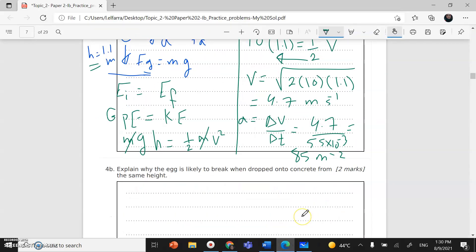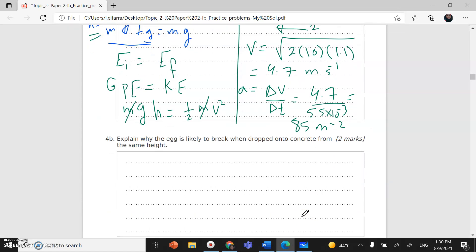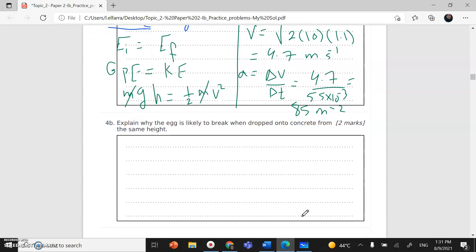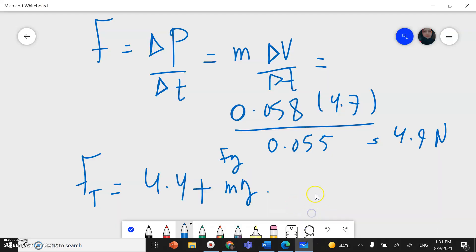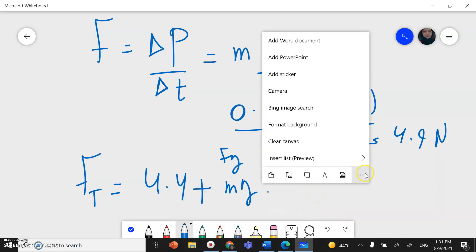Now part 3 of the question: explain why the egg is likely to break when dropped onto concrete from the same height. This is related to momentum. We know from Newton's second law, force equals change in momentum divided by change in time.